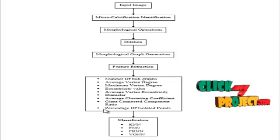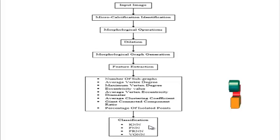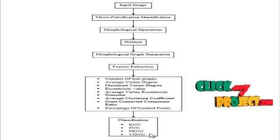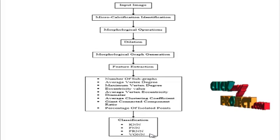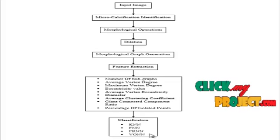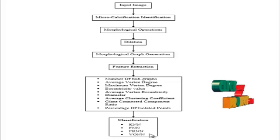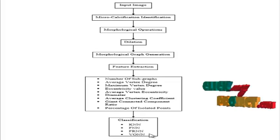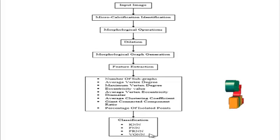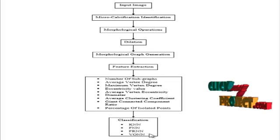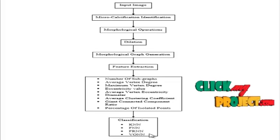Additional features include percentage of isolated points. These values were classified using k-nearest neighbor, fuzzy nearest neighbor, FRNN, and VQNN classifiers. Performance was measured in terms of accuracy, specificity, and sensitivity. The input mammogram images were classified into benign or malignant based on the morphological graph generation and feature extraction.